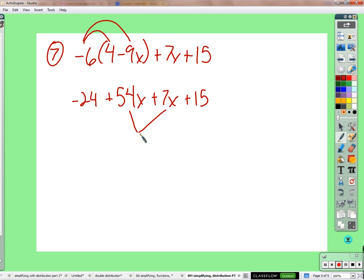54x plus 7x is 15. Let's see, we have a couple of x terms here. 54x plus 7x is 61x. And negative 24 plus 15 is a negative 9. It's all done. All done.